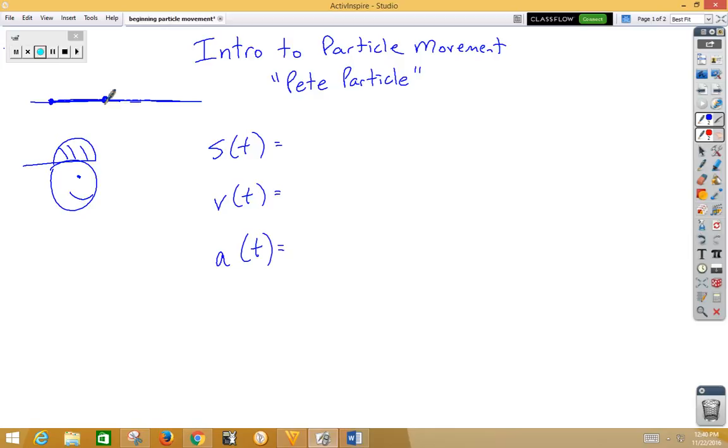So let's go through and look at the varying types of functions that we have. S of t stands for position, and that's where Pete is on the line at any given time.